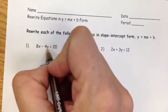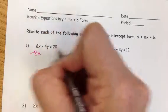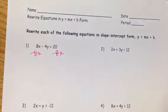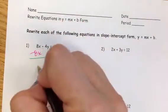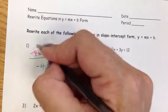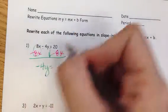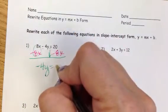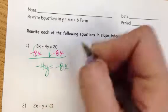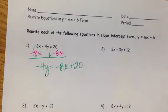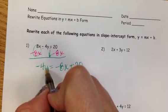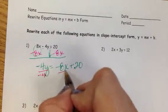If we have to solve for y in number one, the first thing we're going to do is take 8x away from both sides. As I work down, I'm noticing that many of you are leaving behind the negative sign. The 8x minus 8x is going to make 0, and I can't combine 20 and negative 8x because they're not like terms. So I'm going to write it as negative 8x plus 20.